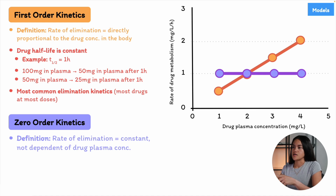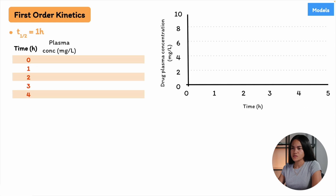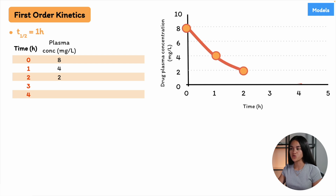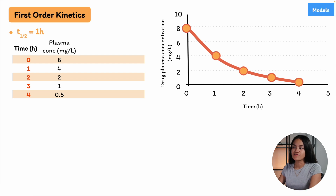Let's take a closer look at the plasma concentration-time curves. For first-order elimination kinetics, starting at 8 mg/L with a one-hour half-life, the drug plasma concentration splits in half after each hour: 8 mg/L → 4 mg/L after one hour → 2 mg/L after two hours, and so on. Each hour, we divide the drug plasma concentration by two, and if we follow that rule we are drawing an exponential decay — this is the typical plot for first-order elimination kinetics.